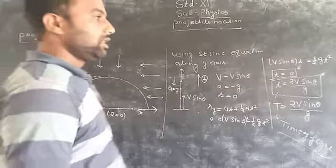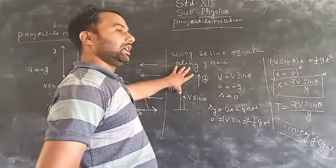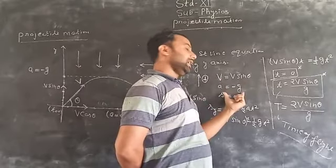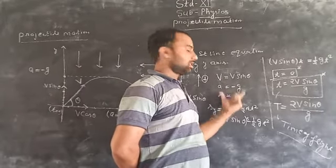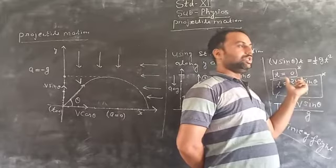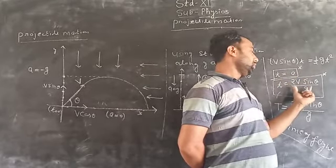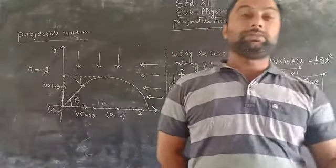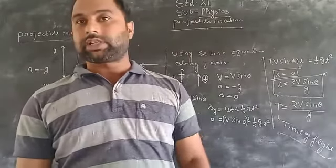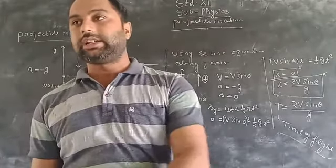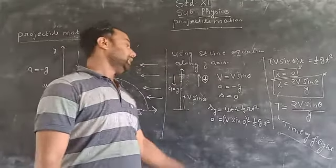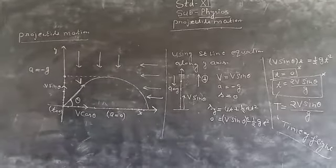To summarize the derivation: we used the equation of motion along the y-axis, substituted the velocity component, the acceleration, and the displacement along the y-axis. This gives two times at which the displacement is zero — the first is T = 0 (the start), and the second is T = 2v sin theta / g, which is the total time the particle travels upward and then downward — the time of flight.